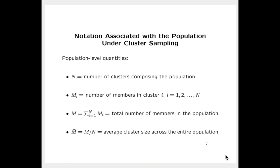Here is some notation associated with cluster random sampling at the population level. Cap N is the number of clusters comprising the population. For each i going from 1 to N, cap M sub i is the number of members within cluster i. The sum of the M sub i's, written as cap M without a subscript, is the total number of members in the population. Dividing cap M by cap N gives cap M-bar, which is the average cluster size across the entire population.